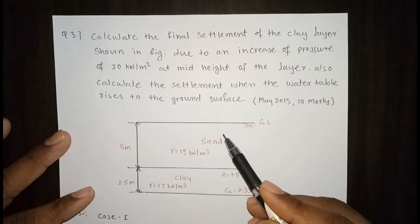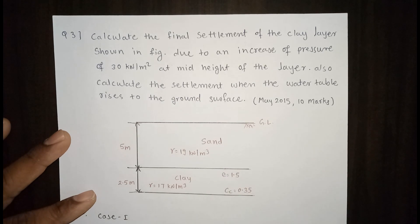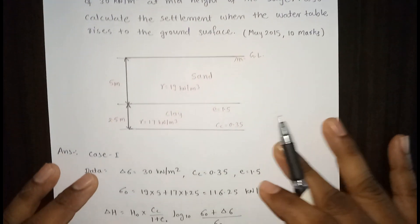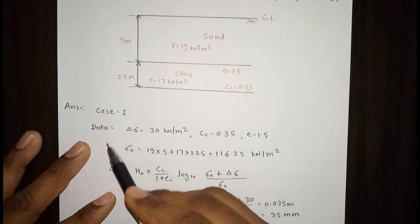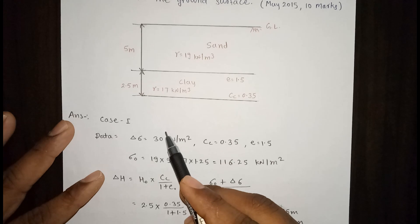This is the ground level. Below the ground level there is a sand layer for 5 meters and after 5 meters there is a 2.5 meter clay thickness. Gamma is given for sand and clay. First we will see the first case. In first case we are not considering the water table.